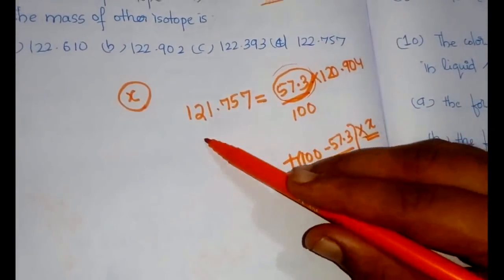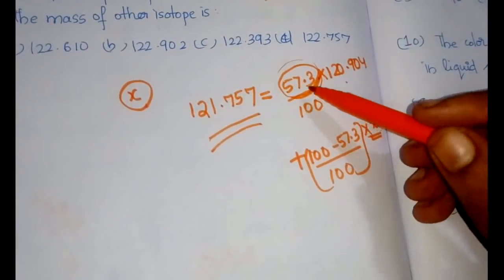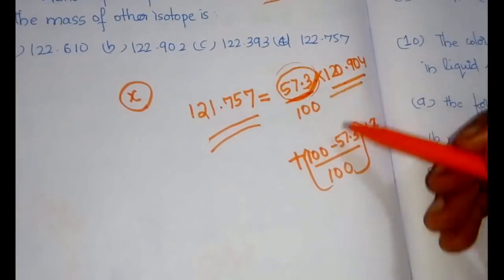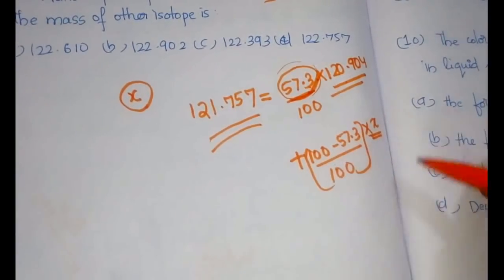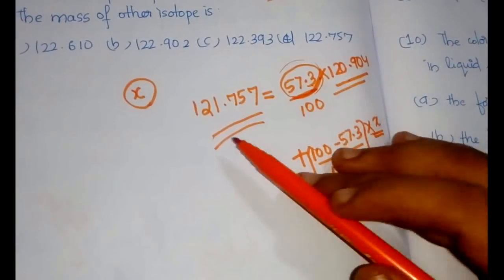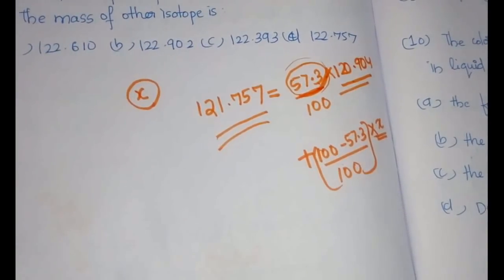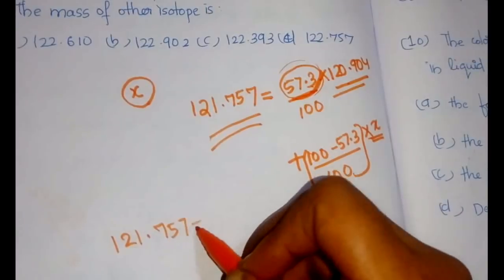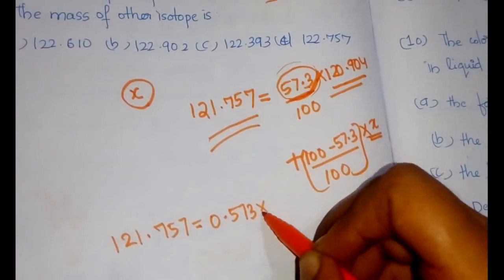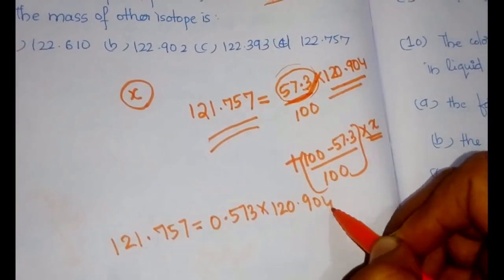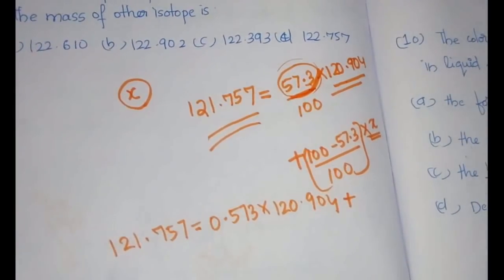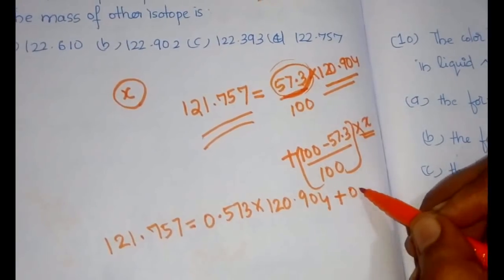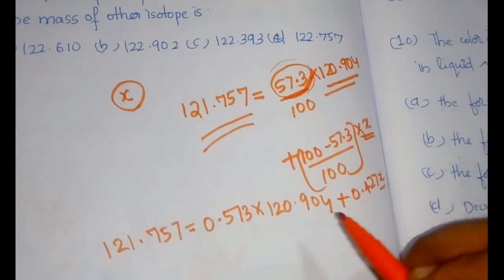The relationship is: let the unknown mass equal x. The total atomic weight 121.757 can be written as (57.3/100) × 120.904 + (100 - 57.3)/100 × x. We have to find x. This is the relationship when we have two different isotopes with different masses.